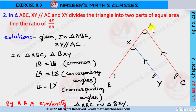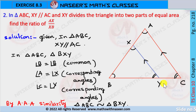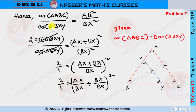Here we have 2 triangles: triangle ABC and triangle BXY. In these 2 triangles, angle B is common, and angle A is equal to angle X because XY is parallel to AC, so angle A is corresponding to angle X. These are equal. Similarly, angle C is equal to angle Y because these 2 are also corresponding angles. By angle-angle-angle similarity, we can say that triangle ABC is similar to triangle BXY.